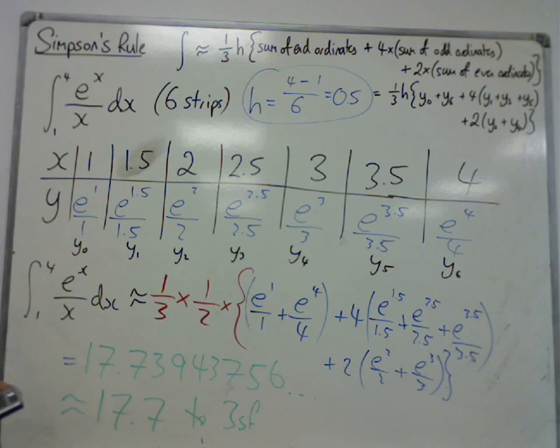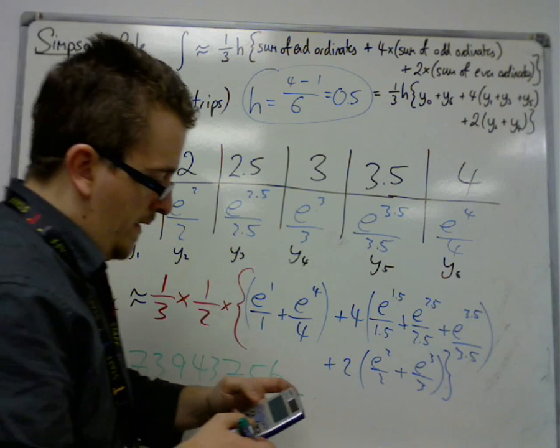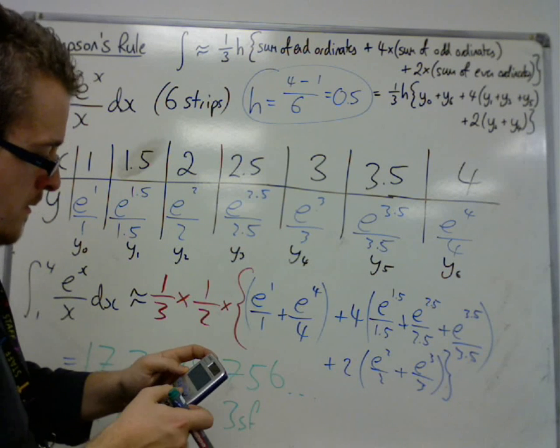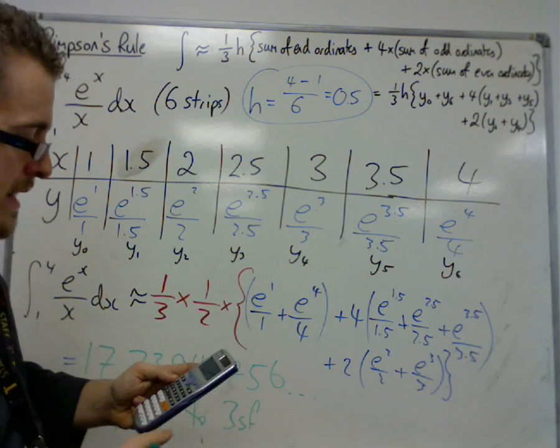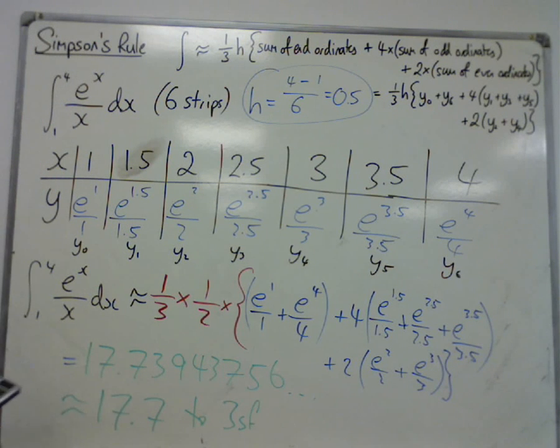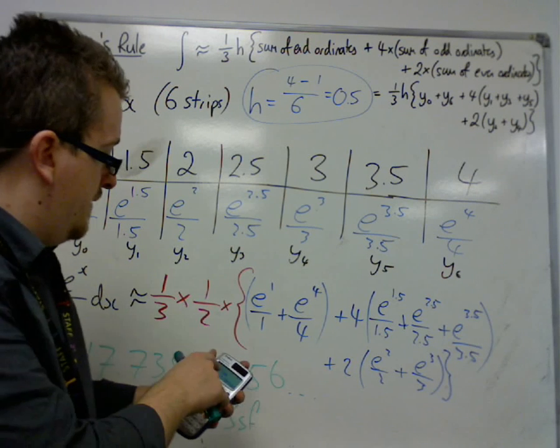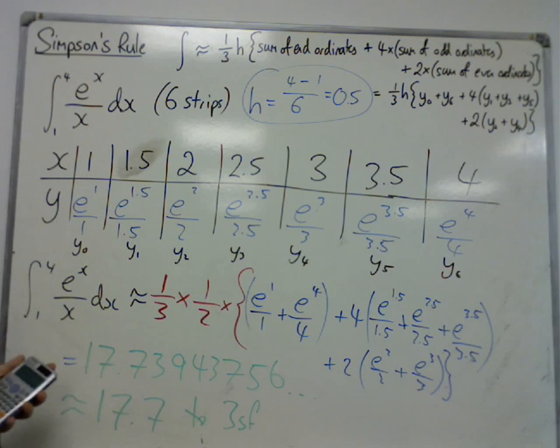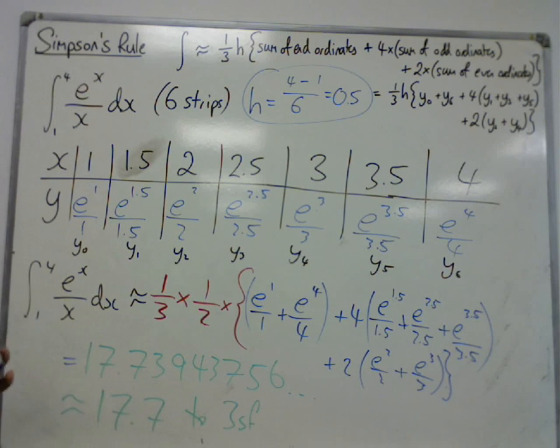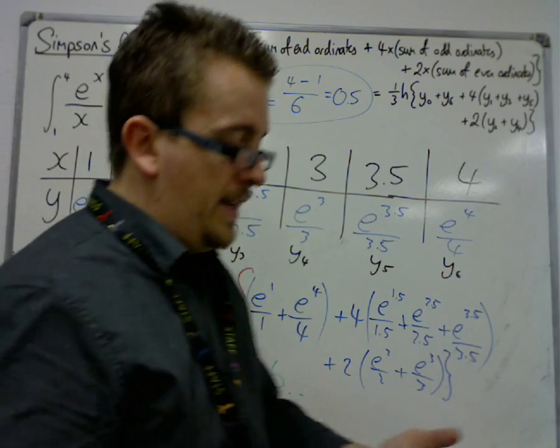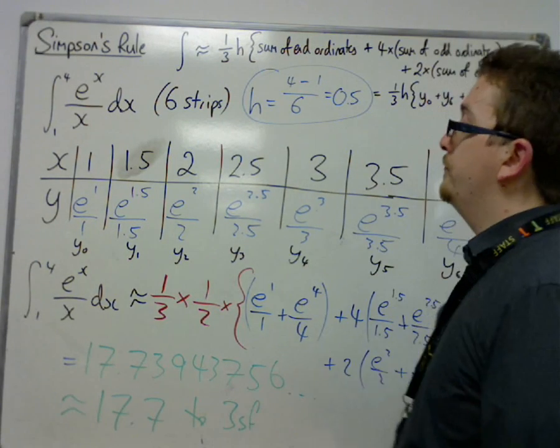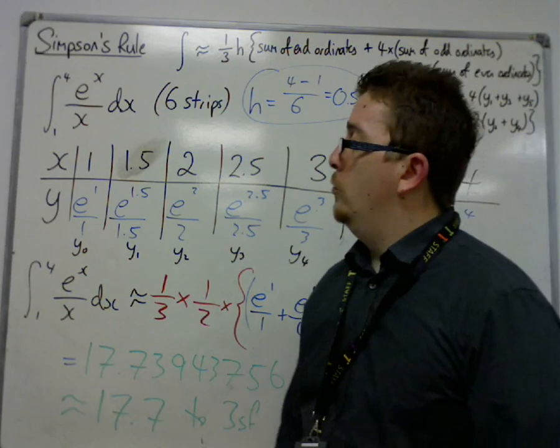So I'm just going to use my calculator here to check whether that's reasonable. You never know, it's very easy to make a mistake on this. No, that looks very good. The exact answer is 17.735756. Well, not exact answer, but a closer estimate. So this one is very good. Much closer than the trapezium rule would likely have been. So that's how Simpson's rule works.